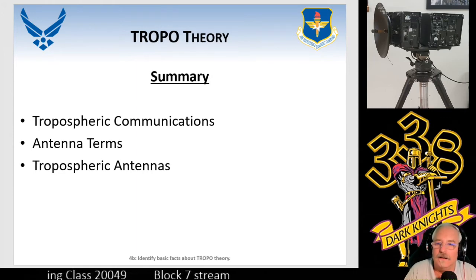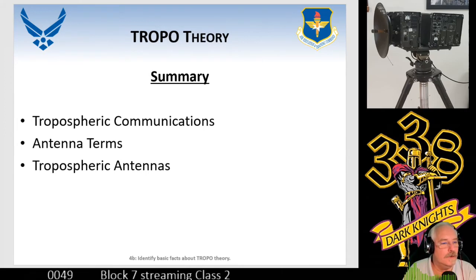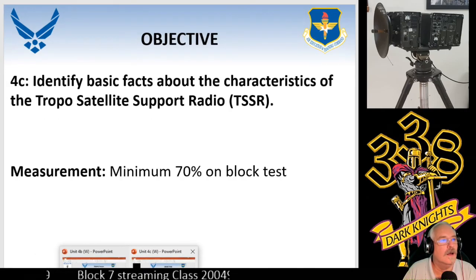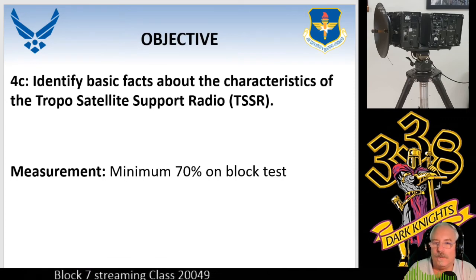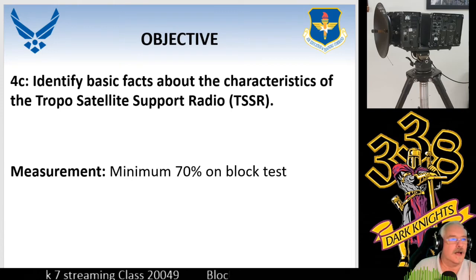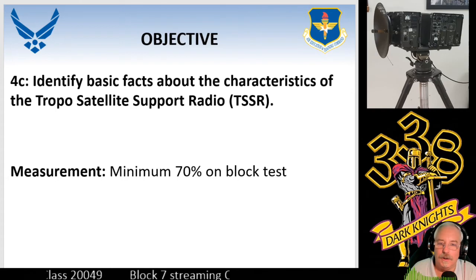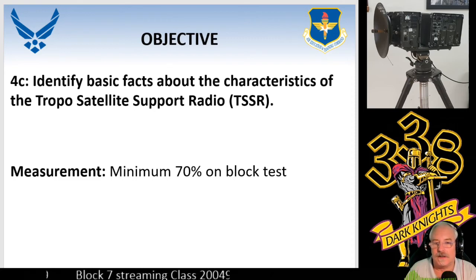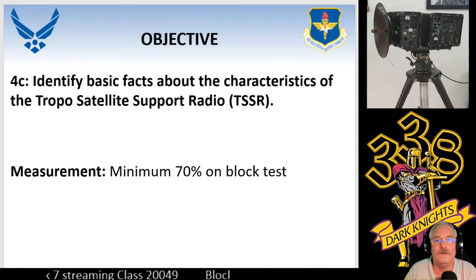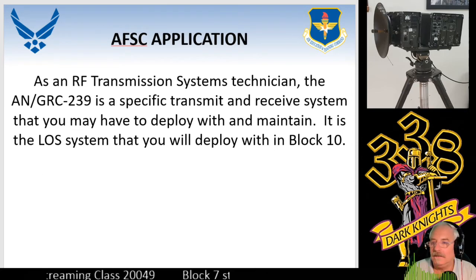Any questions? None for me, sir. All right. So we're going to go through the next one, which is for Charlie. We'll only go through part of it — probably the first five or six slides. Identify basic facts about the characteristics of the tropo satellite support radio. This is better known as the Jerk 239. You have the tech order for this, and we will go over it after we get through Cs and Ds. I highly recommend having Cs and Ds out when we follow them tomorrow. You've got 70% to pass to move to the next block.